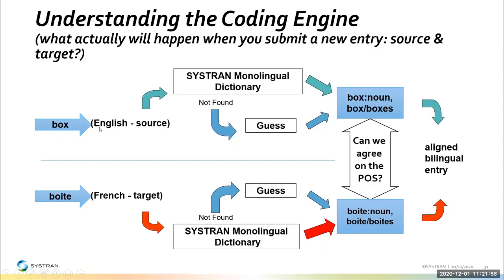The SysTran coding engine is a key part to understand when working with dictionaries. It looks at the word coming in — like 'box' in English, then 'la boîte' in French — and analyzes it to see if it already knows what that is. If it's an exact match, bingo. If not, if there are duplicates, ambiguities, or only a partial match, it will take a guess and find something it says is probably a noun or verb. In French, 'boîte' is probably the box, although it could also be the conjugated form of limping. It decides which way the two agree, then it's an aligned bilingual entry. This automatic detection handles many cases.